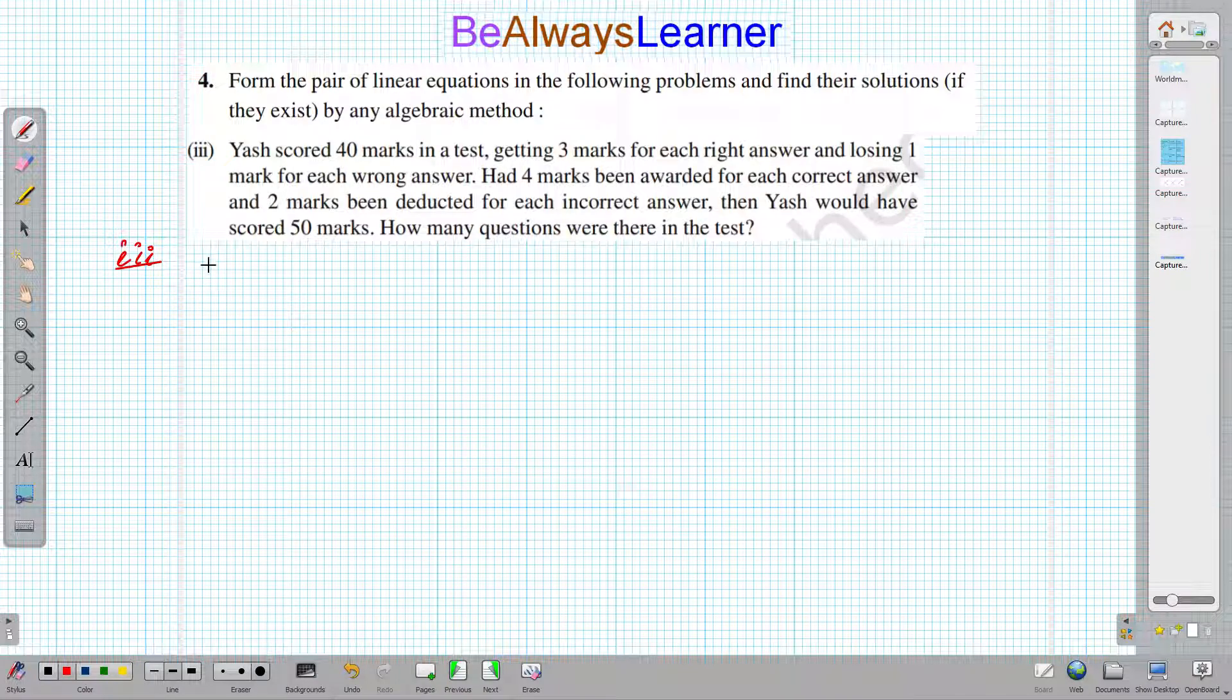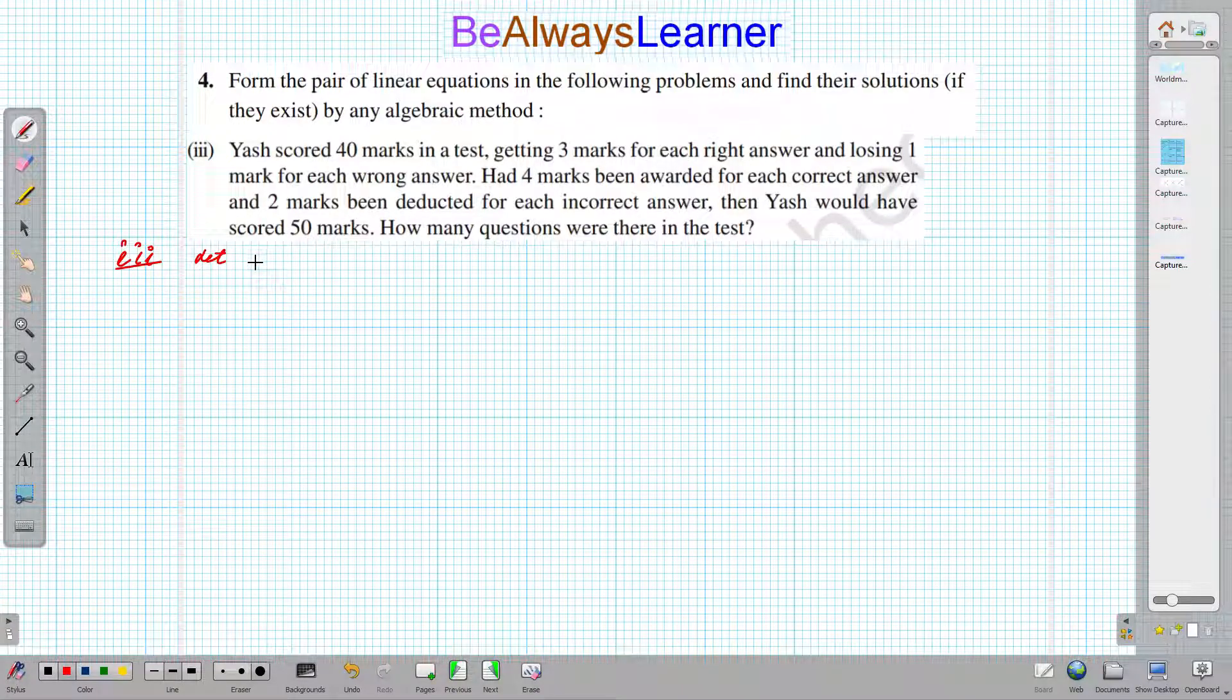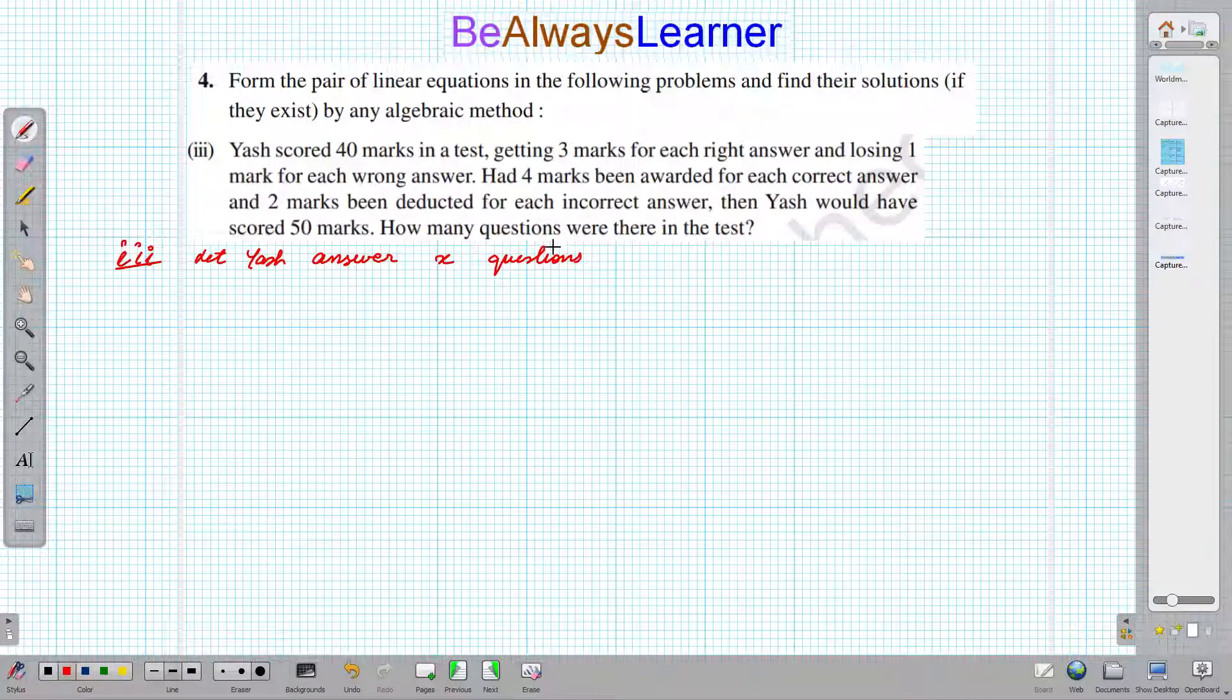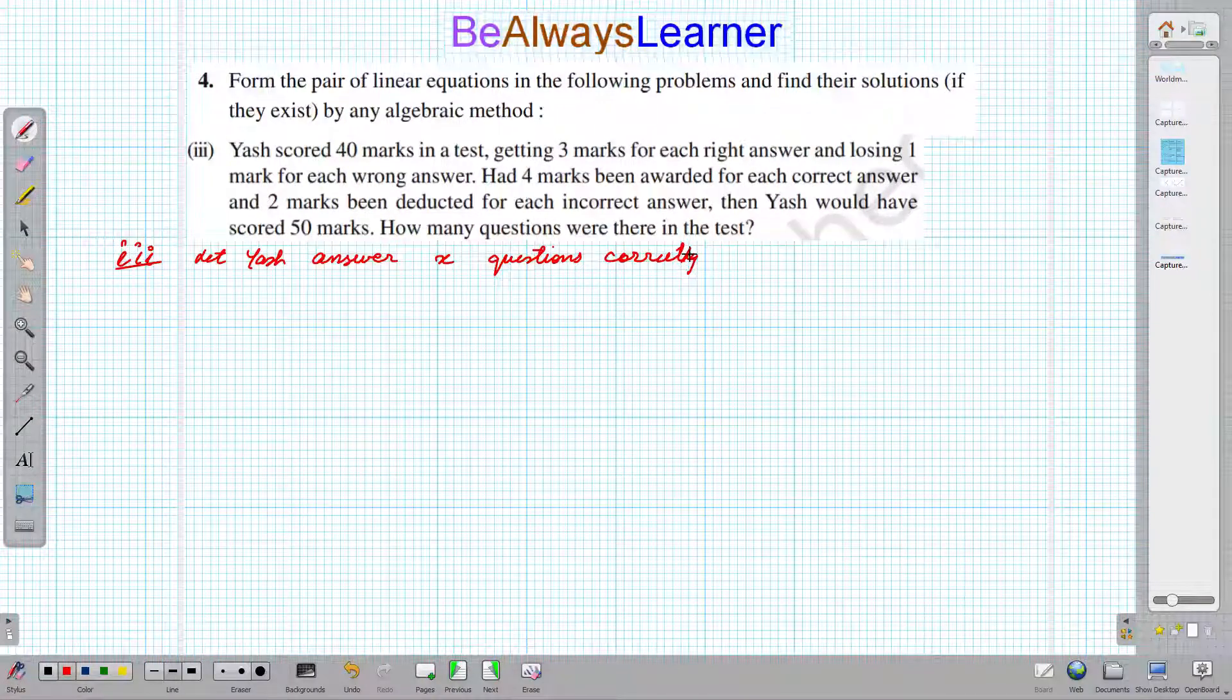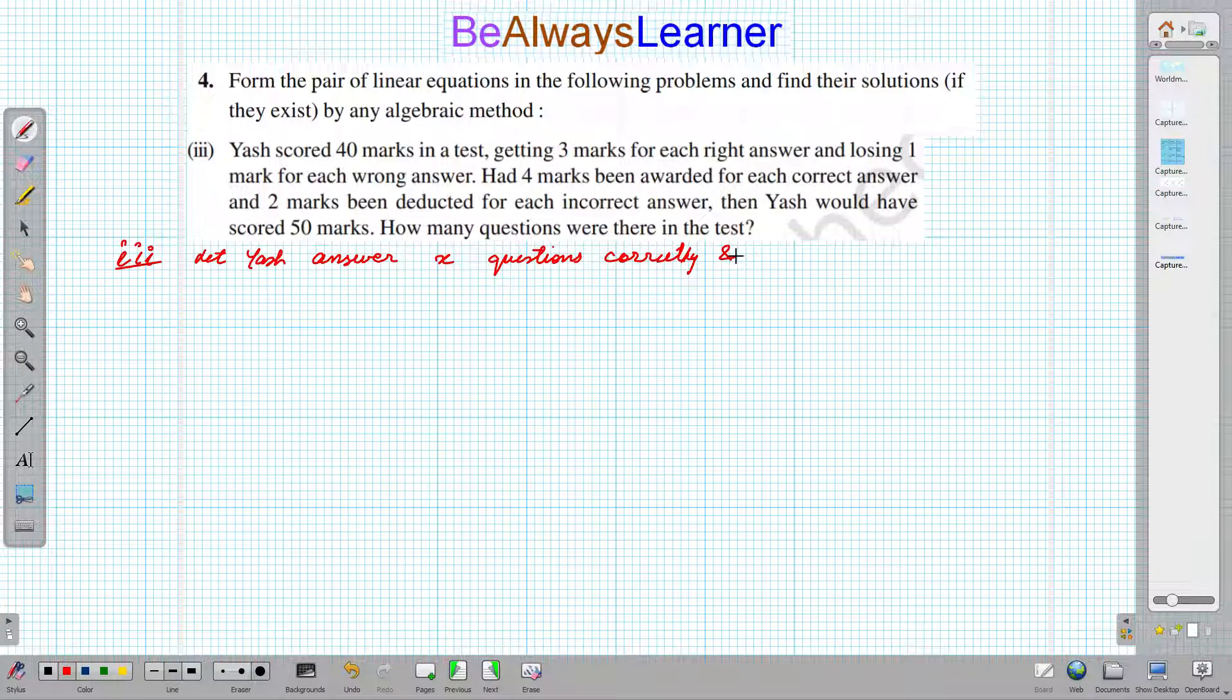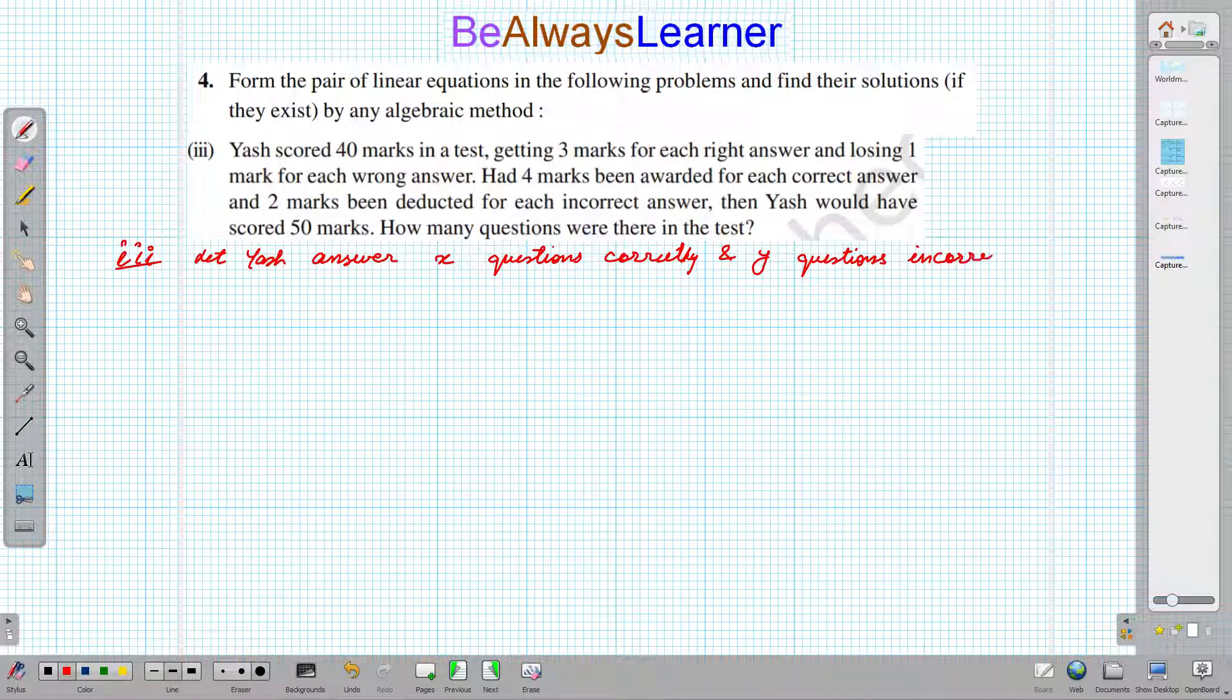So, let us have incorrect or correct answers as x and y. To make the equations, let Yash answer x questions correctly and y questions incorrectly.